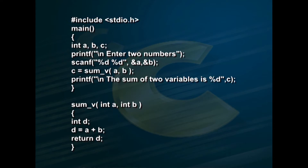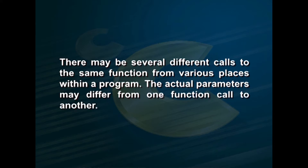Let us consider another example of a function with a return value. Within main, we declare three integers a, b, c, read two values a and b, then set c equal to sumv(a, b). In the function definition sumv(int a, int b), we declare another variable d, set d equal to a plus b, and return d. This program returns the sum of two variables a and b to the calling program; the sum is stored in variable c through the return d statement. The actual parameters may differ from one function call to another, but within each call, the actual arguments must correspond to the formal arguments in number and data type.